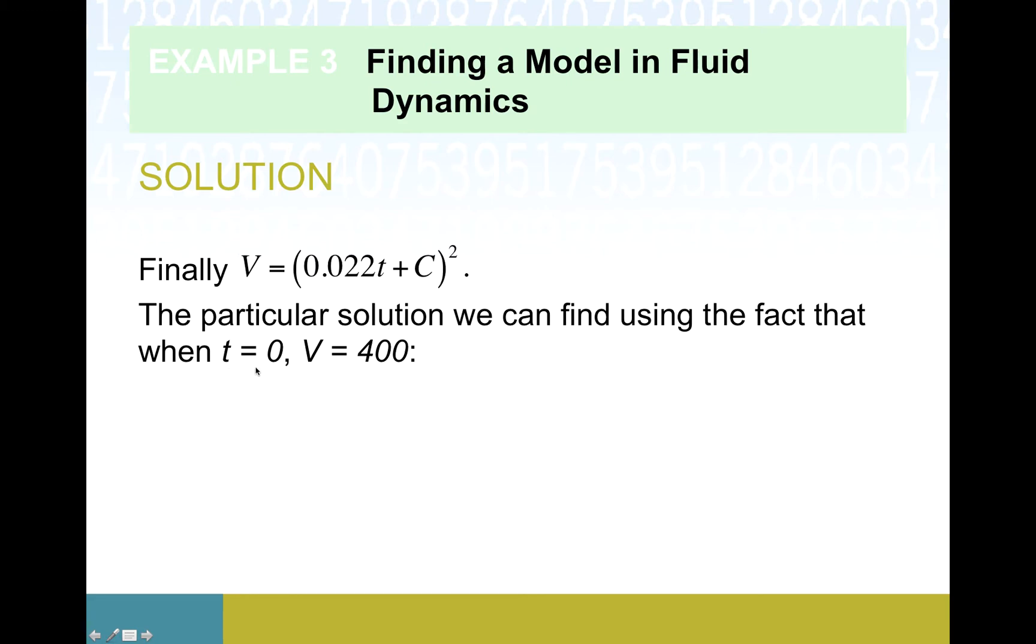Back when this problem started, they told us initially, in other words when t equals zero, there were 400 cubic centimeters in this container. So t equals zero implies v equals 400. This is good enough for us to solve for c, because once I know what value of v is, 400, we have a value for t, zero, then we get c is equal to, and I feel like I have to take a little side venture here. You guys have been doing algebra for a while, and you know that if you introduce a new square root to an equation, which is what we have to do in order to get rid of this square, this plus or minus business comes along for the ride.